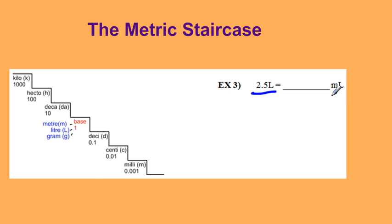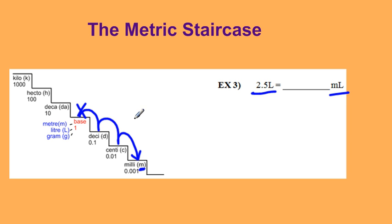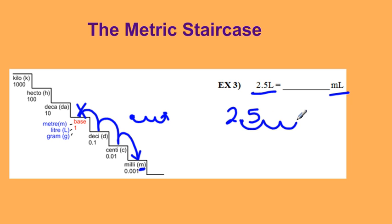Example three is converting from liters to milliliters. Liters again is one of my base units so I'm starting on my base stair, and I'm converting to milliliters which is my small m. I'm going down three stairs, and because I'm going down I'm moving my decimal to the right three spots. Starting with 2.5 and moving it to the right three spots, my decimal will be there and I fill those in with zeros. So 2.5 liters is actually two thousand five hundred milliliters.